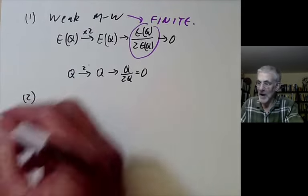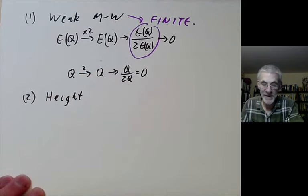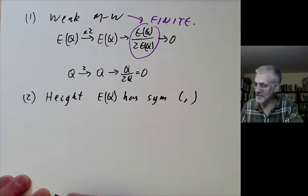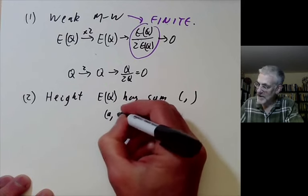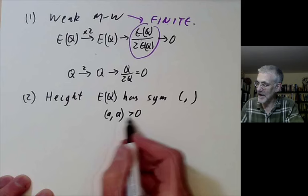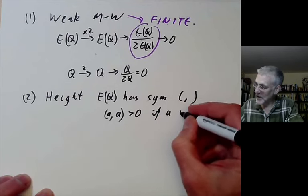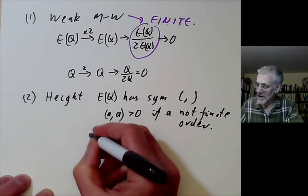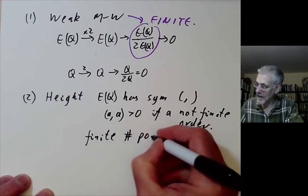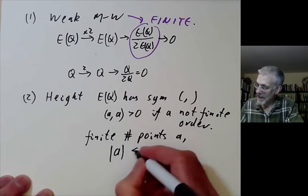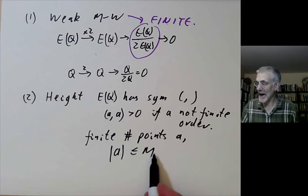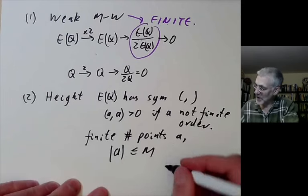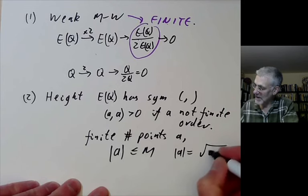To get the full Mordell-Weil theorem, we also need the height of a point on elliptic curve. What this says is that E(Q) has a symmetric bilinear form with the following property that it's more or less positive definite. So the form on A is greater than 0 if A is not of finite order. And the key property is that there are only a finite number of points with length at most that, where the length of a point is just the square root of the inner product with itself.